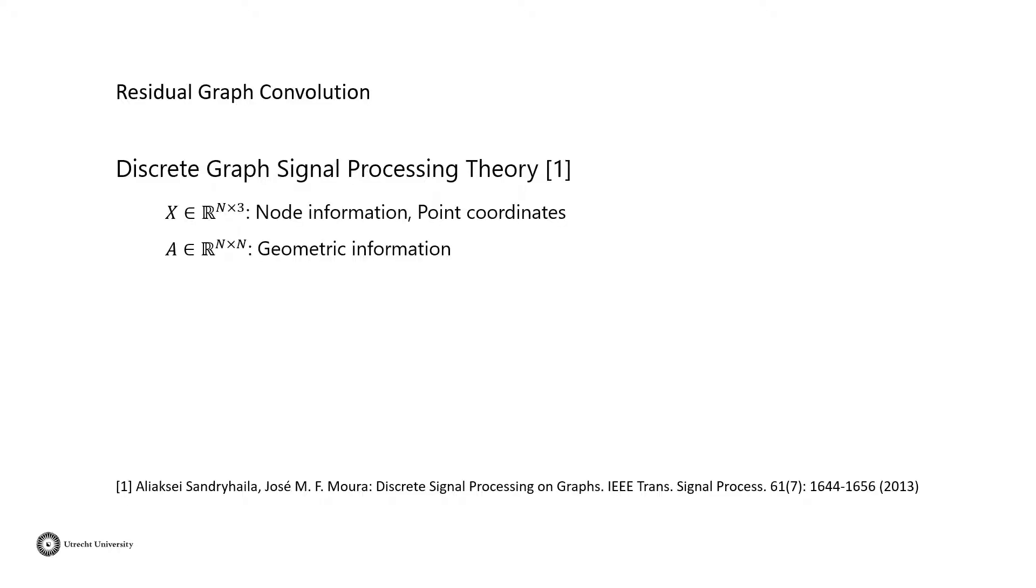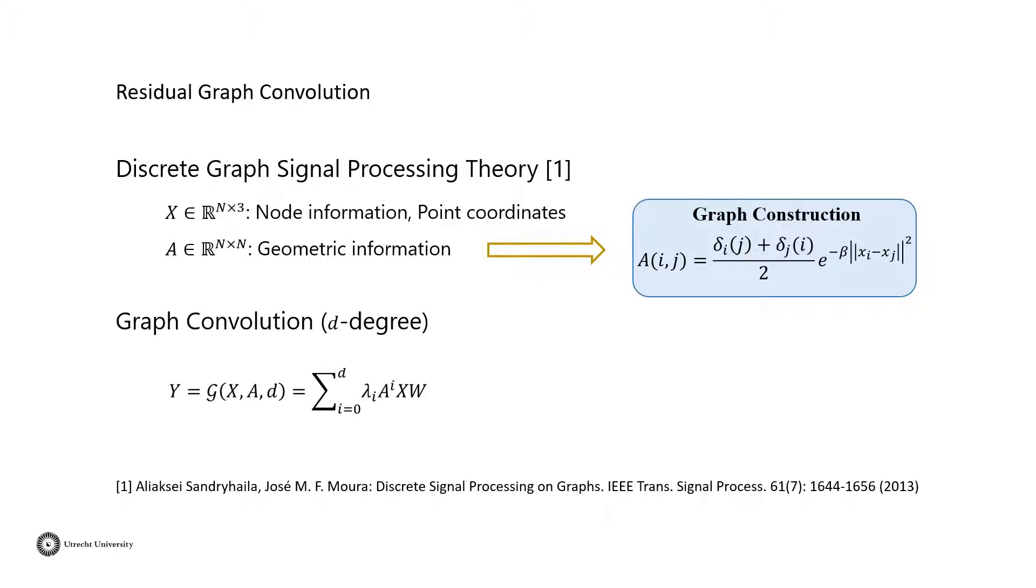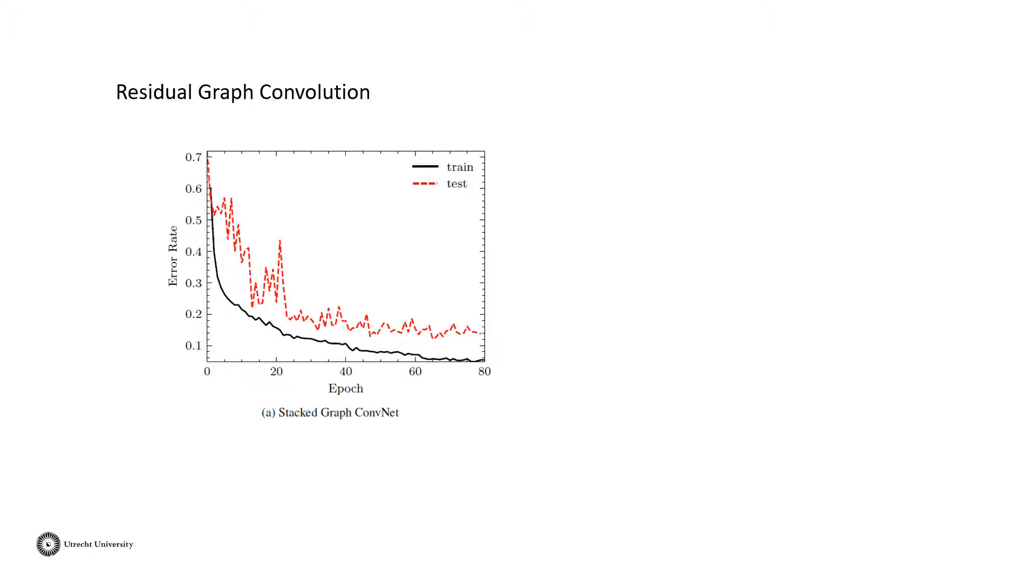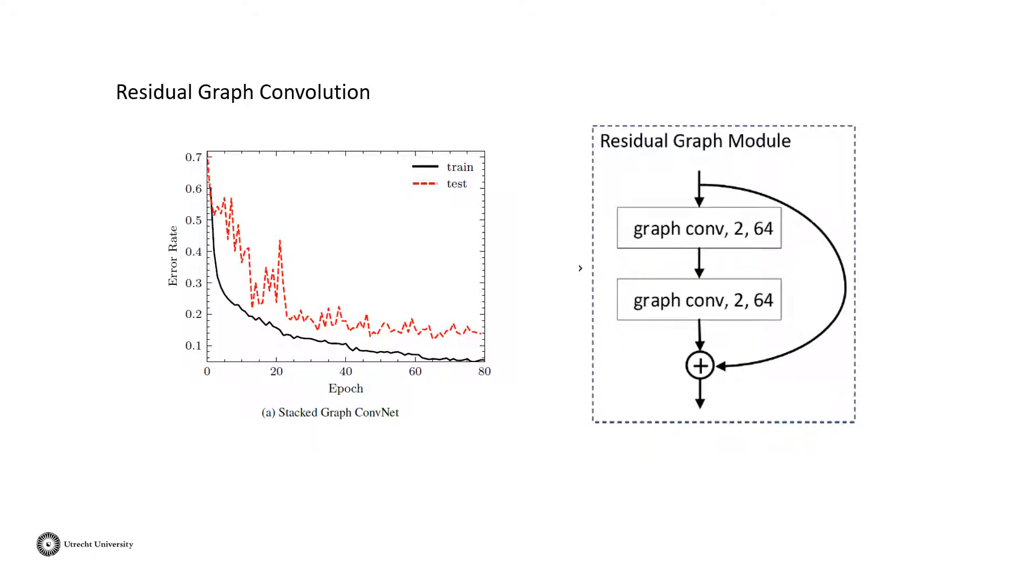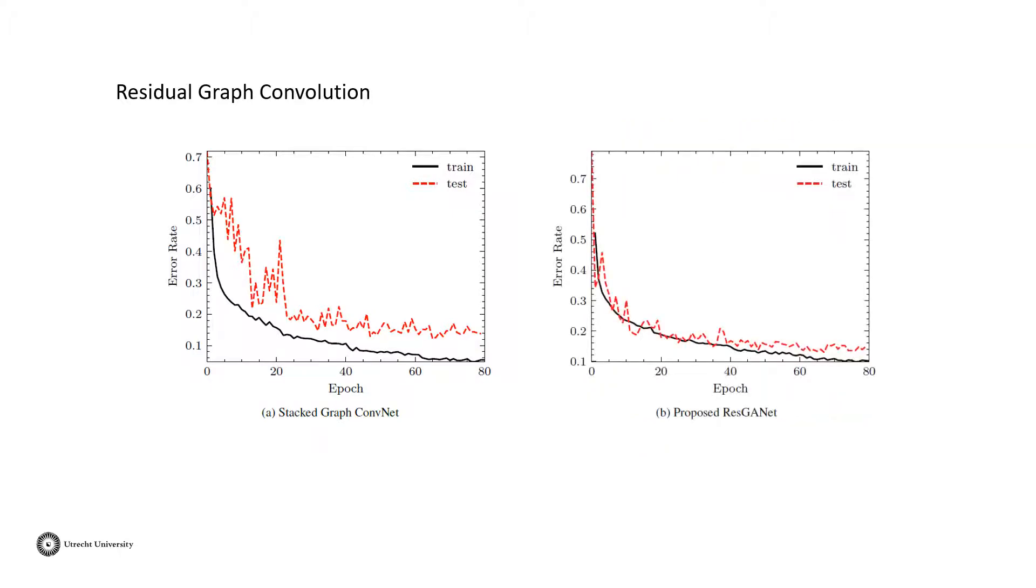First is the residual graph convolution module. Our definition of graph convolution is derived from the discrete graph signal processing theory. In the theory, input data is encoded by two variables. X denotes the node information, and A is the adjacency matrix, which encodes the geometric information and is constructed from the X. The graph convolution with D degree can be formulated by a polynomial. In the formulation, lambda and w are trainable parameters. D is similar to the dilation rate in CNN, which controls the size of the receptive field. When applying the graph convolution unit, we find that there is a big gap between train and test error rates. To alleviate this problem, we propose to use the residual block by adding a skip connection between the input and output. In this way, the training and test gap is alleviated and the model is more robust.